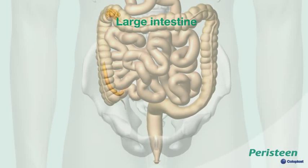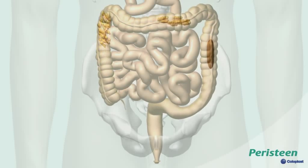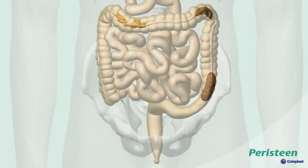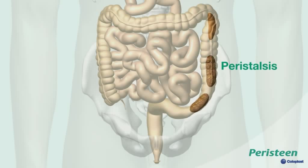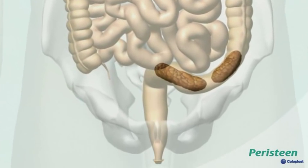In the large intestine, water and salts are absorbed. The waste products become firmer and turn into stool. The stool is pushed towards the rectum by means of muscle contractions of the intestine walls, also called peristalsis. You have three to four major bowel movements a day.